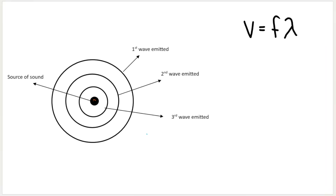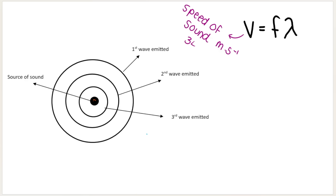You should remember this formula from grade 10. We can use it to calculate one of three variables. V is the speed of sound measured in meters per second — usually around 340 meters per second in the Doppler effect, although this can vary depending on where you are. F is frequency, and frequency is measured in hertz.